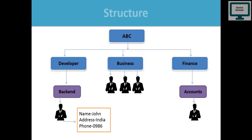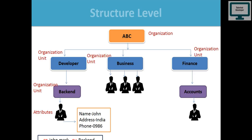Now let's understand how we can map this to the Lightweight Directory Access Protocol. The top-level hierarchy is always known as the Organization — so my organization name is ABC. It has sub-categories called Organization Units at the second level. In this diagram we currently have three Organization Units: Developer, Business, and Finance.